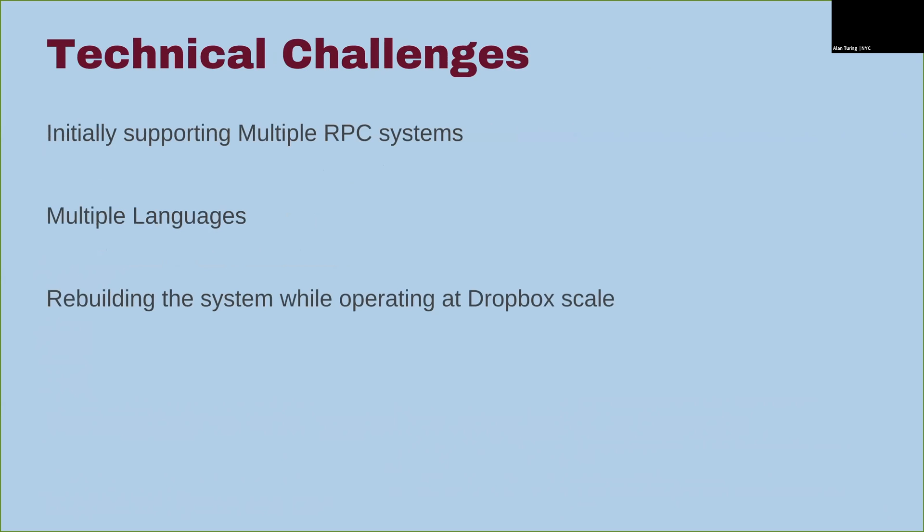Technical challenges: initially, because we're evolving the system and wanted to keep feature parity, we had to support multiple RPC systems — our legacy Dropbox RPC and the new Courier system. Multiple languages: we have to support everything the service framework supports. And finally, most tricky: this tracing framework operates at Dropbox scale — millions of QPS of inter-service traffic — and we need to hollow out the inside of this and put tracing in there without affecting latencies or normal service operation.